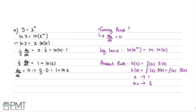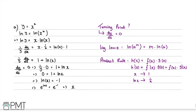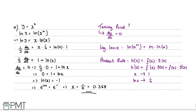Since (1/y)·0 = 0, we have 0 = 1 + ln(x), which rearranges to ln(x) = -1. Taking exponentials of both sides, the exponential and log cancel, leaving x = e^(-1) = 1/e, which is approximately 0.368 to three decimal places. This is the x-coordinate of the turning point of C.